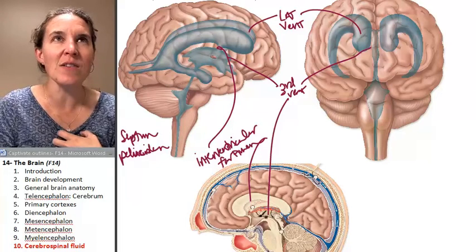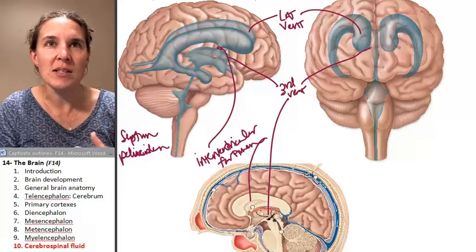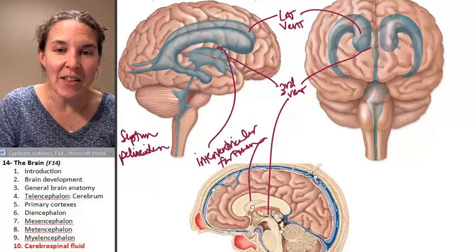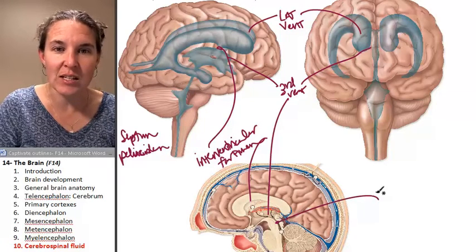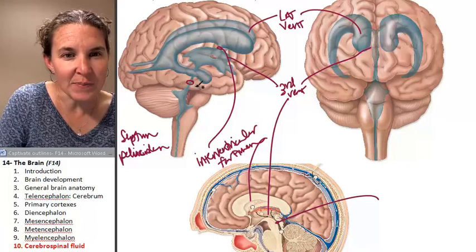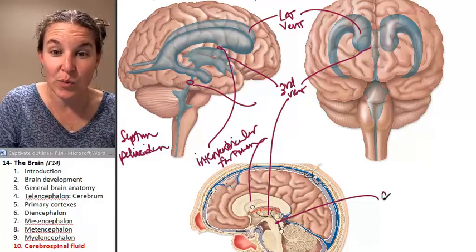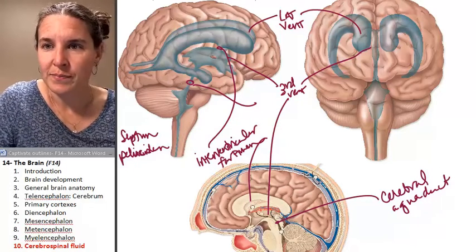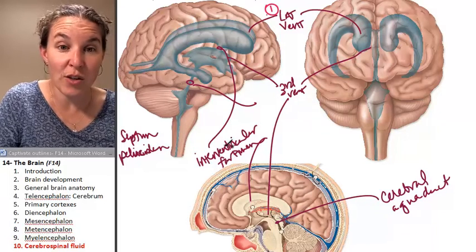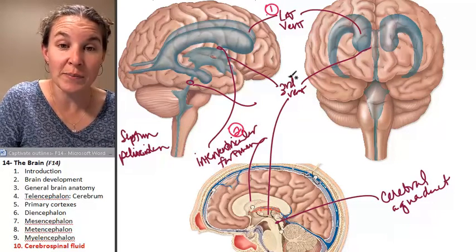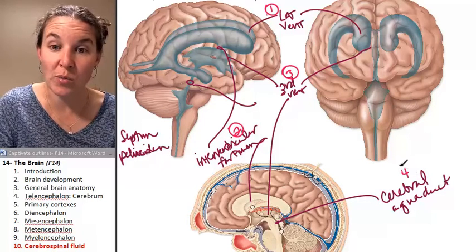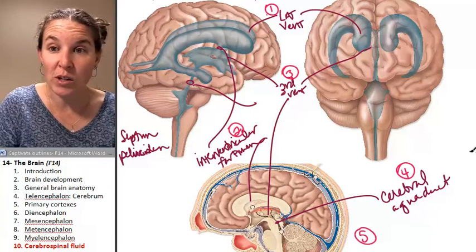The third ventricle is kind of in the thalamus, hypothalamus, epithalamus zone — it's a space. And then there's another little duct called the cerebral aqueduct. The lateral ventricle is connected to the third ventricle through the interventricular foramen, and the third ventricle is connected to the fourth ventricle via the cerebral aqueduct.